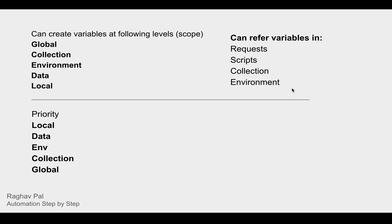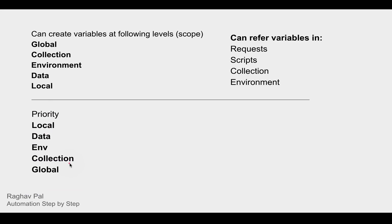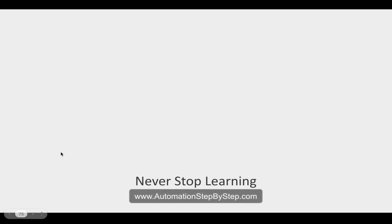When you have variables at multiple levels, and you have the same variable name at multiple levels, this is the priority that will be followed. For example, if you have the same variable called 'username' at environment level and also at collection level, the variable from the environment level will be referred when you run your request. In the coming session we will learn how to get and set variables from scripts. Thank you for watching and never stop learning.